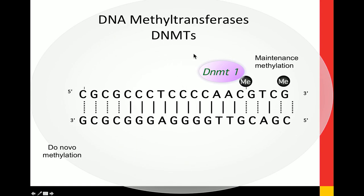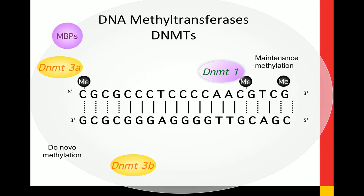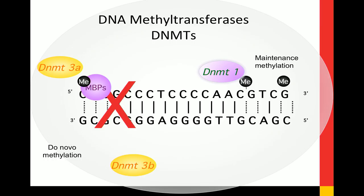DNA methylation is achieved through DNMTs — DNA methyltransferases. DNMT1s are for methylation maintenance, keeping a cell true to its phenotype so a liver cell stays a liver cell. DNMT3As are considered your de novo, experience-dependent methylation enzymes. They add methyl groups to cytosines, which attracts methyl-binding proteins and, in simplified terms, blocks transcription. Bridget Nugent in the lab asked: is there a sex difference in DNMTs and DNA methylation in the neonatal preoptic area?